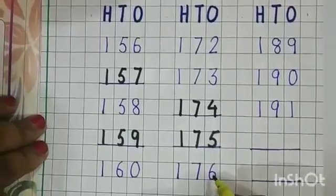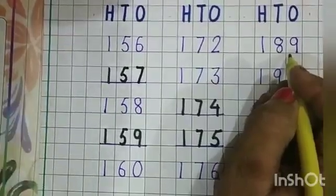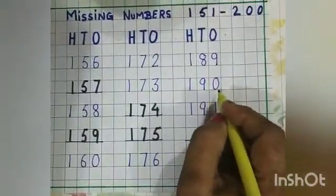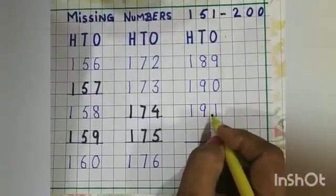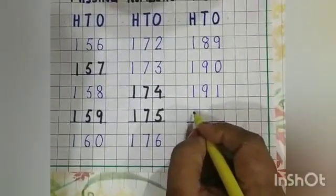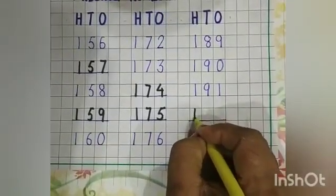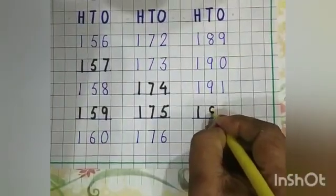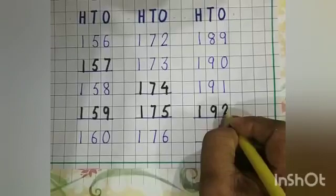Last, we have 189. Next, 190. 191. What comes after 191? 192. So, we will write 192 here.